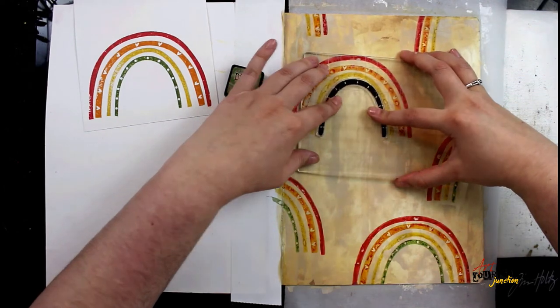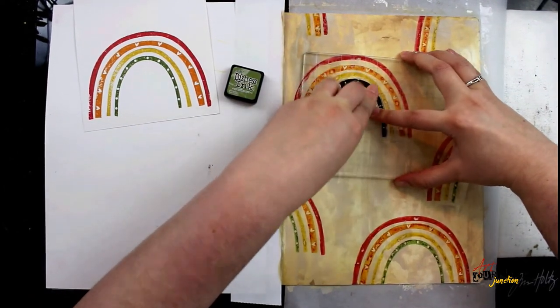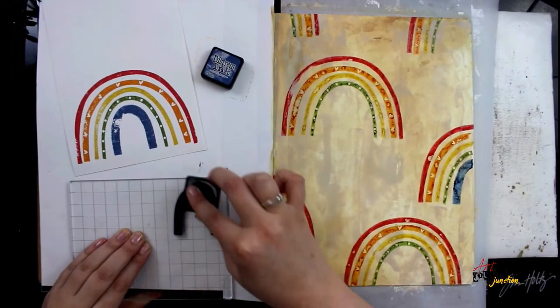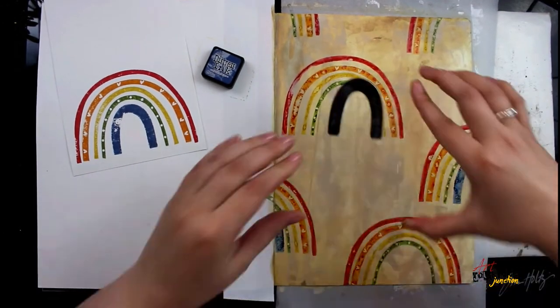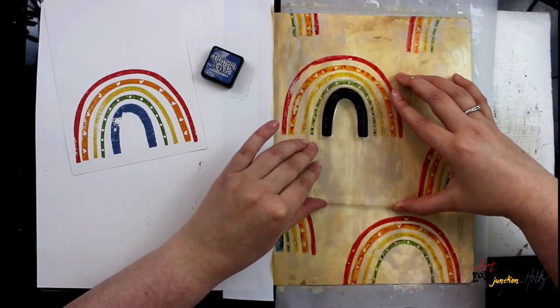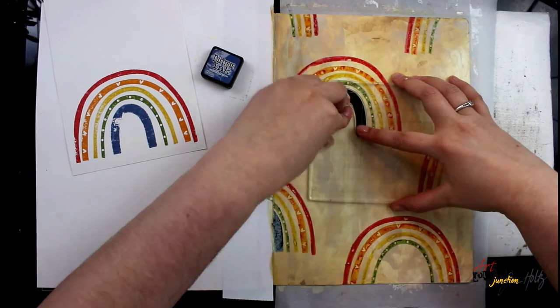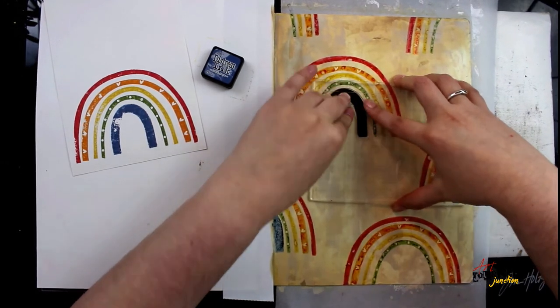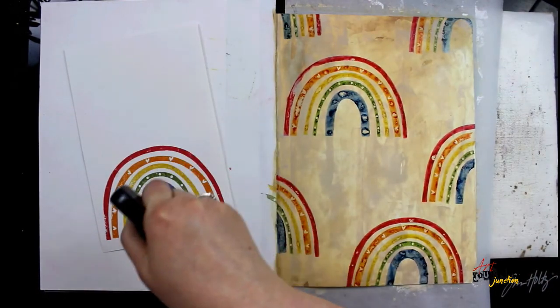After I have all the different colors of the rainbow stamped out, I will be applying water over the top of it to make the ink move and react. I'm also stamping on the white cardstock as well as the background because I will be cutting out the white cardstock rainbow as another layering element on my page.